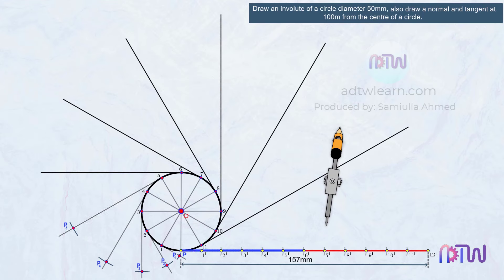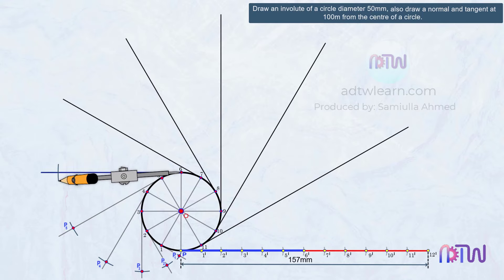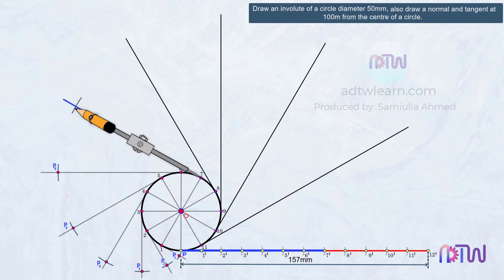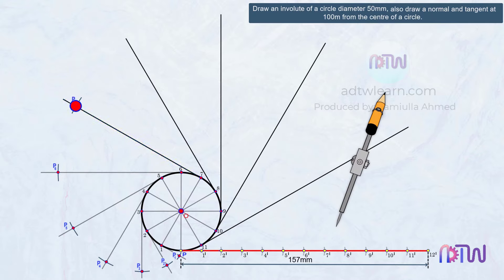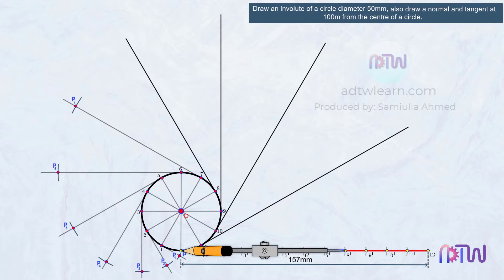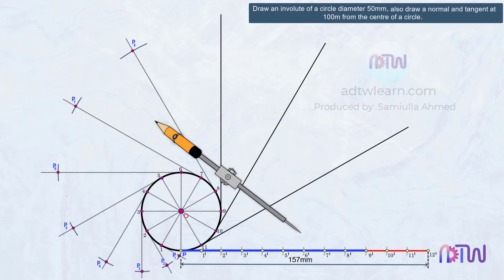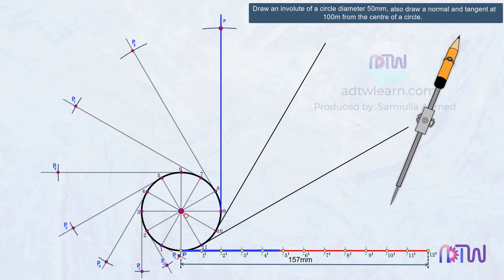Next, take the distance between point 6' to P and using point 6 as a reference, mark an arc — name this point P6. Next, take the distance between point 7' to P and using point 7 as a reference, mark an arc — name this point P7. Take the distance between point 8' to P and using point 8 as a reference, mark an arc — name this point P8. Take the distance between point 9' to P and using point 9 as a reference, mark an arc — name this point P9.